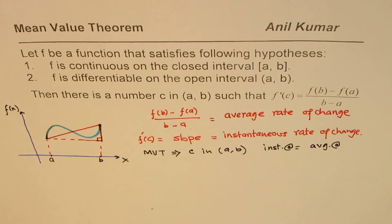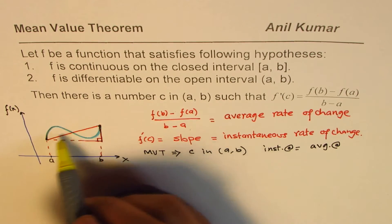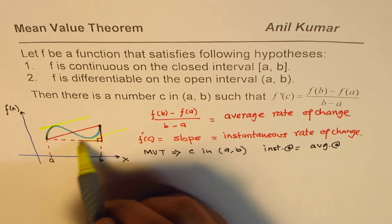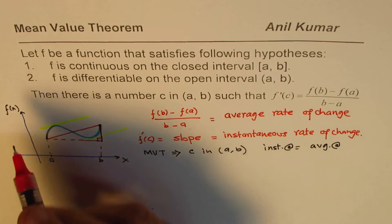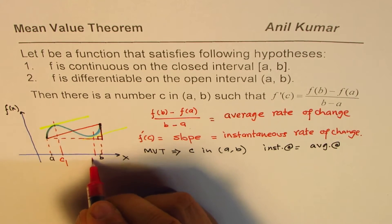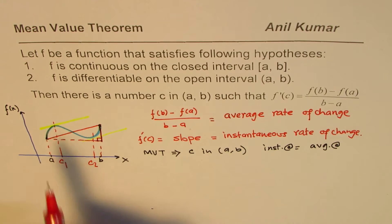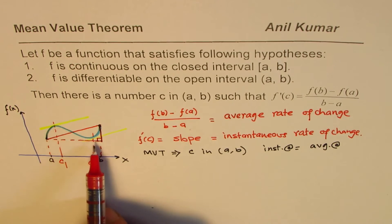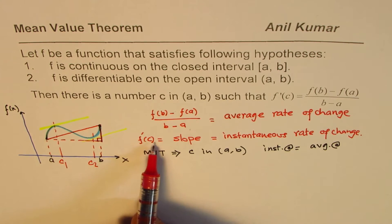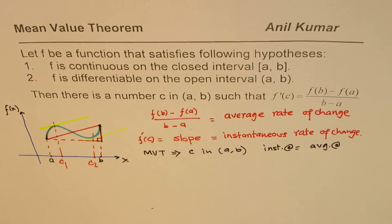What we can see from here is that if I take this function and draw a line parallel to the average rate of change, I could draw one here and maybe one here. So these two points will be my c's — I can call this c1 and the other one c2. As you can see, in this closed interval [a, b], the function is continuous and differentiable, so we have at least one — in this case two — points c1 and c2 where f'(c) has the same value as the difference quotient (f(b) minus f(a)) over (b minus a).